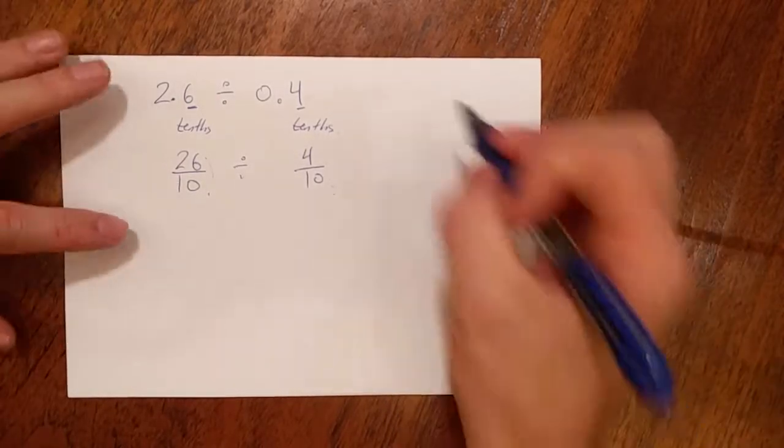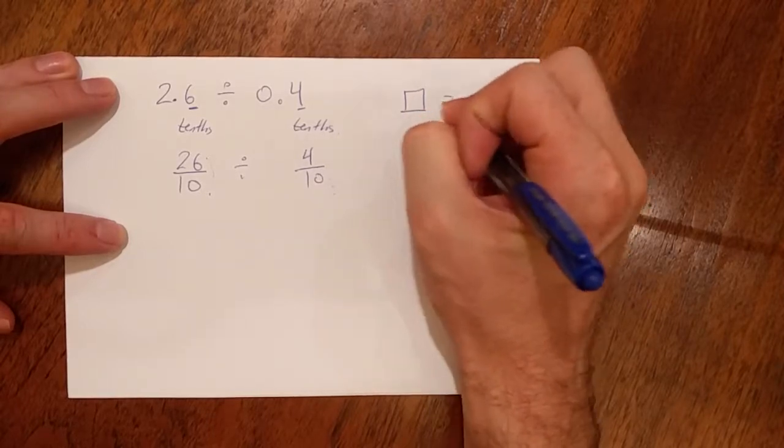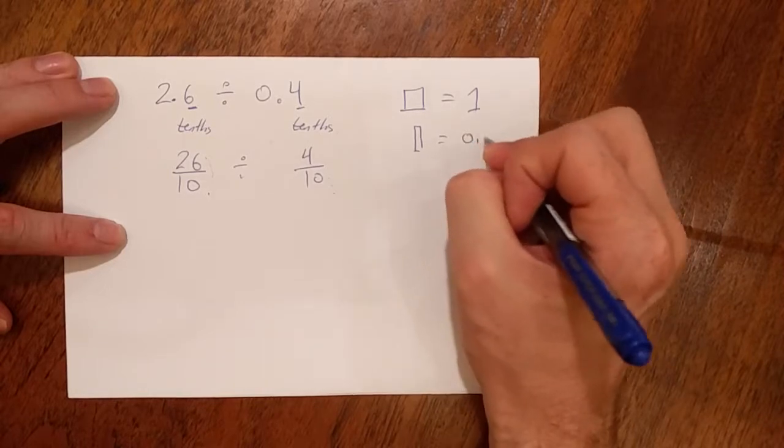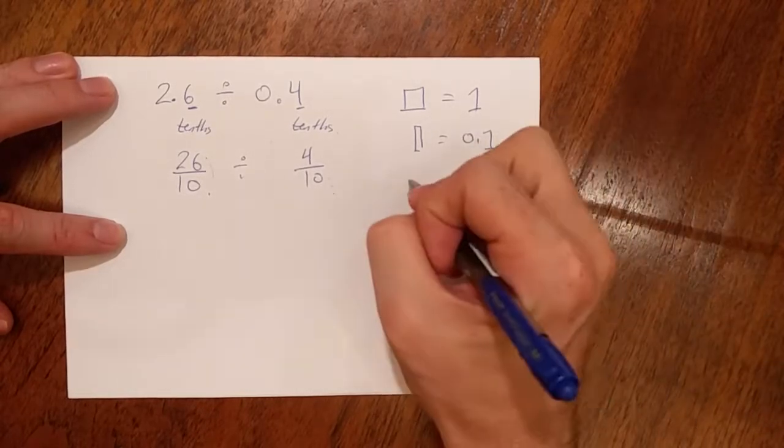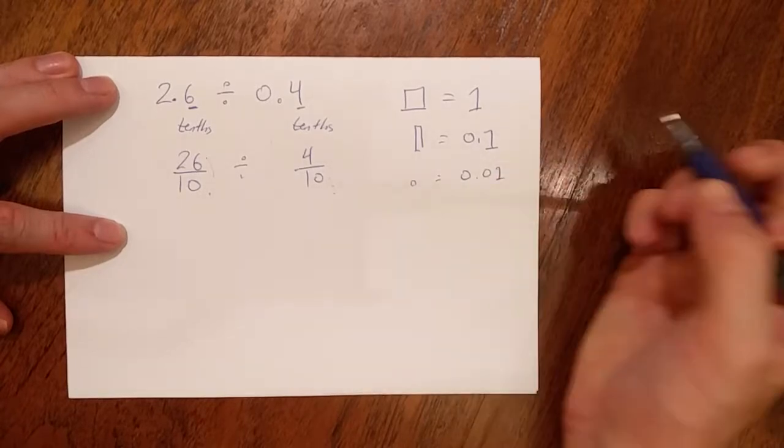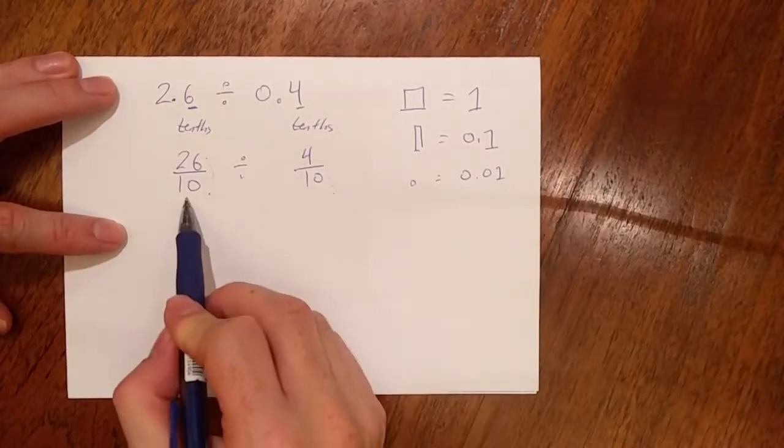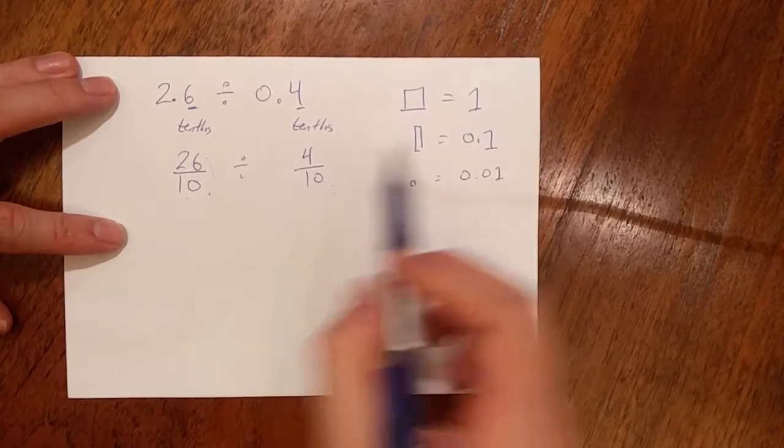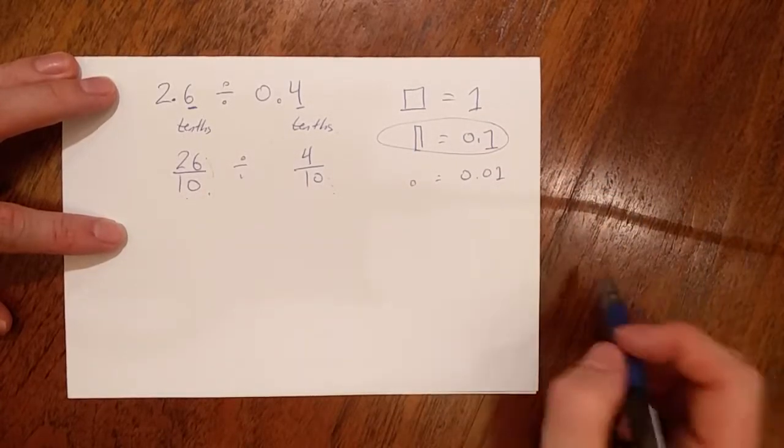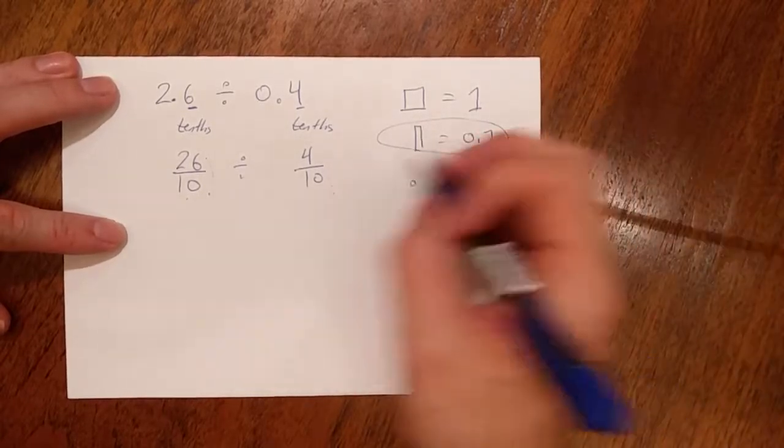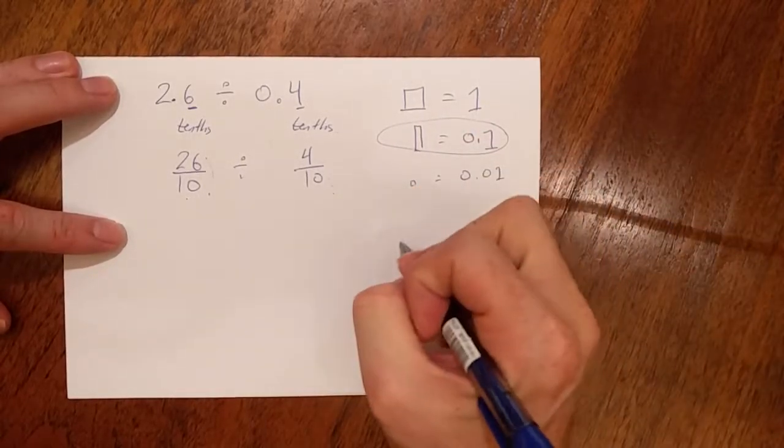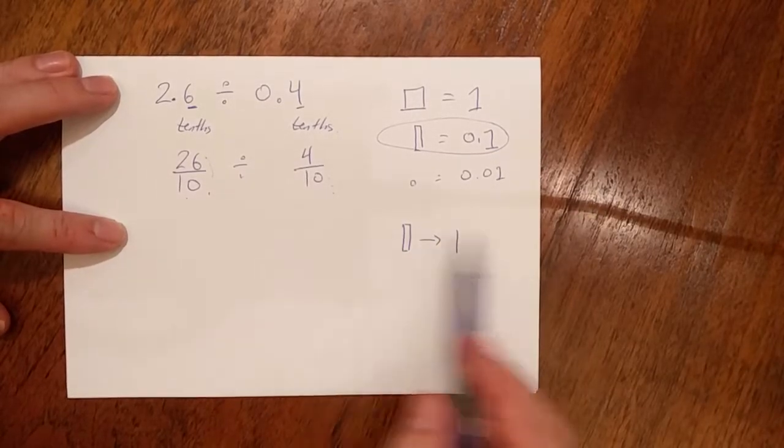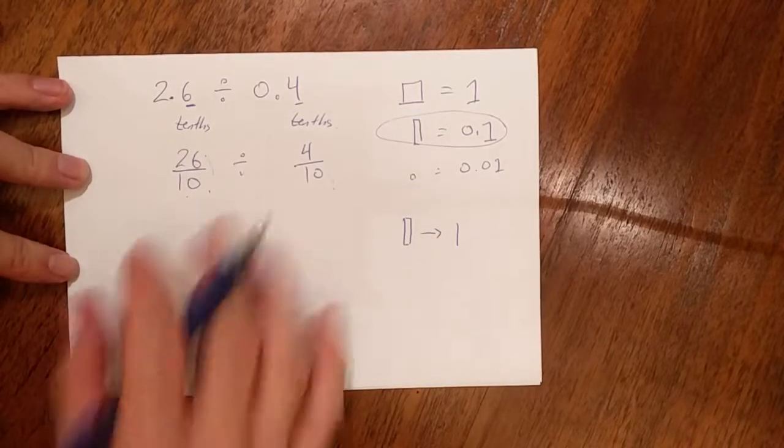Remember back to our base ten blocks, I have the big square, which is a whole. I have the stick, the stick which is a tenth. And I have, well, the block, the block which is a hundredth. Well, what am I dealing with here? I have 26 tenths. I'm going to split them up to groups of four tenths. So that means I'm going to be dealing with these guys over here. Now for our model here, because I don't want to draw these sticks every single time, this stick is going to be simplified as just a line like that. I think you can make that connection.